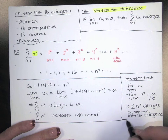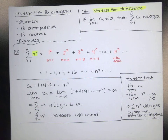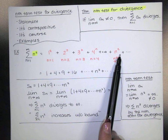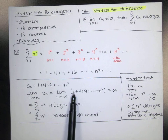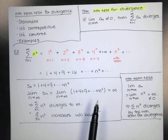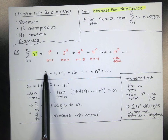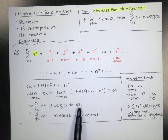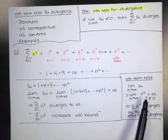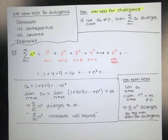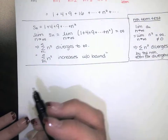This is how I apply the nth term test, and this is how I reason through it to justify it. If n squared is going to infinity and I take the sum of all those terms, of course the sum is going to go to infinity as well. It makes perfect sense. If these are getting larger and larger and I add them together, I'm going to get infinity. So let's just apply the nth term test, although we will also reason through each example to justify our answers.